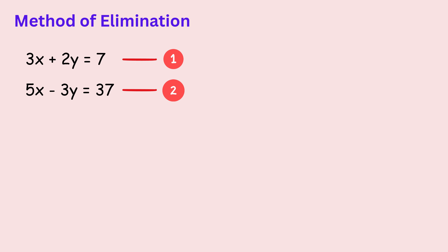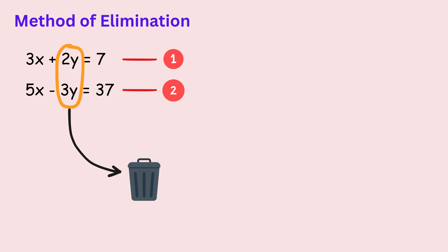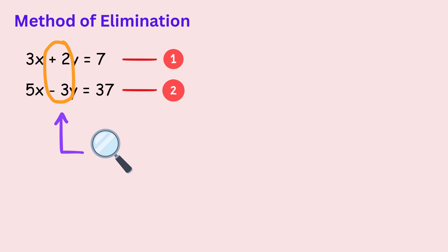In this case, we decide to eliminate the variable y. To do that, we first look at the numbers written in front of y in both equations. These numbers are called coefficients.